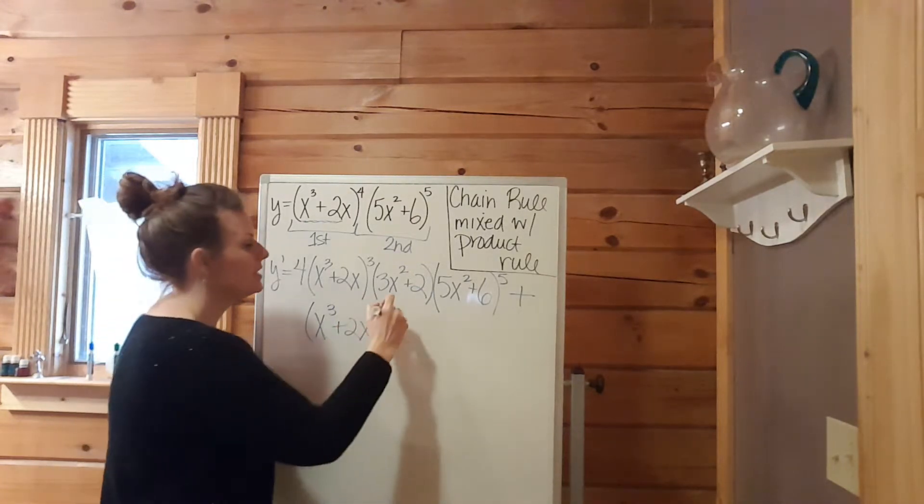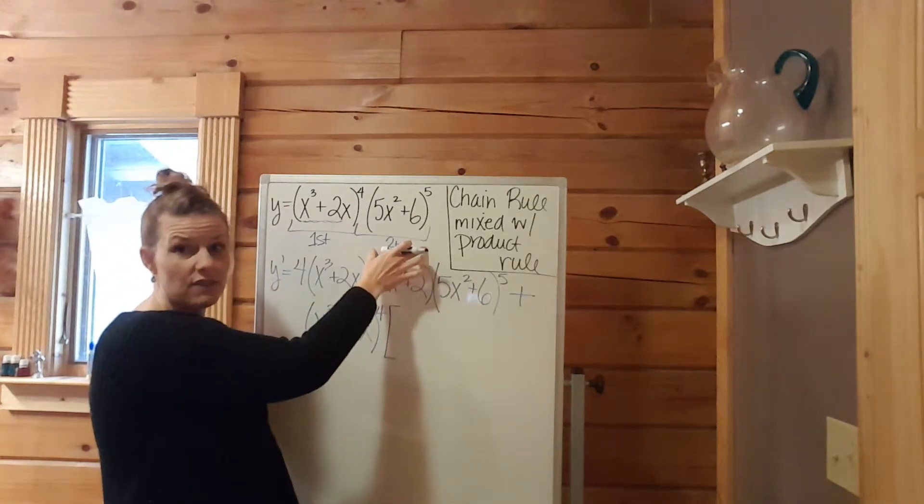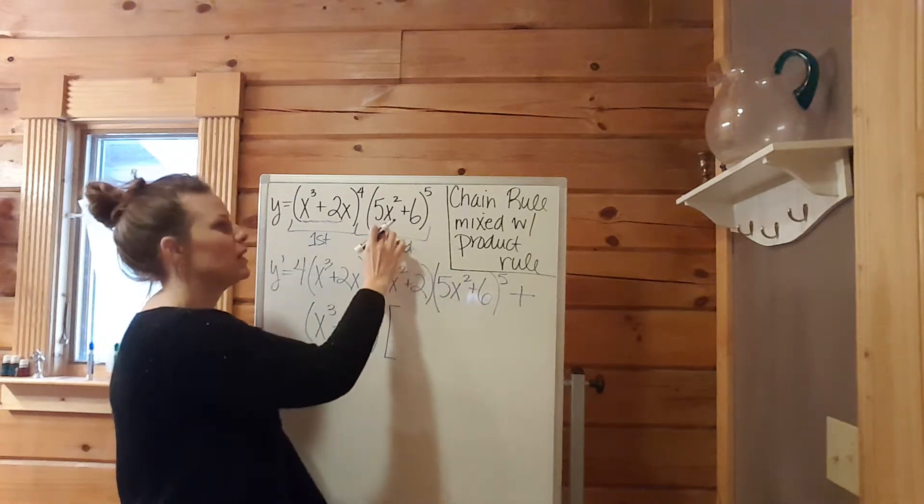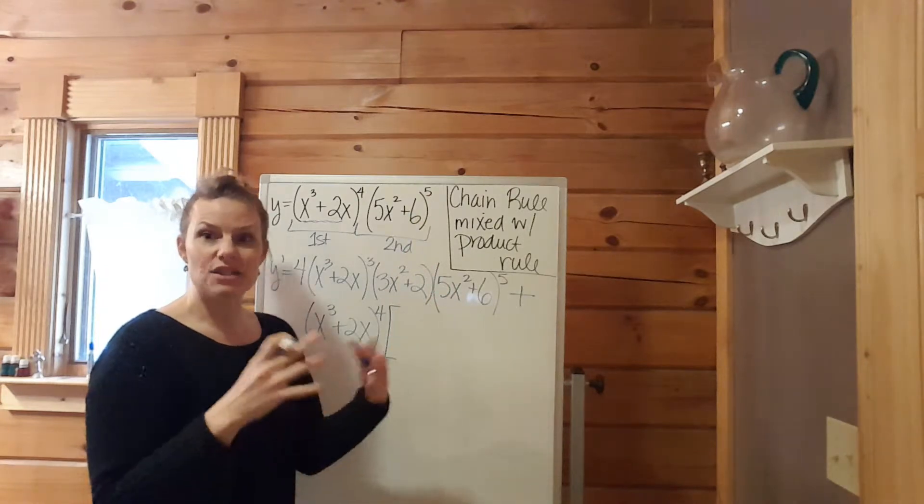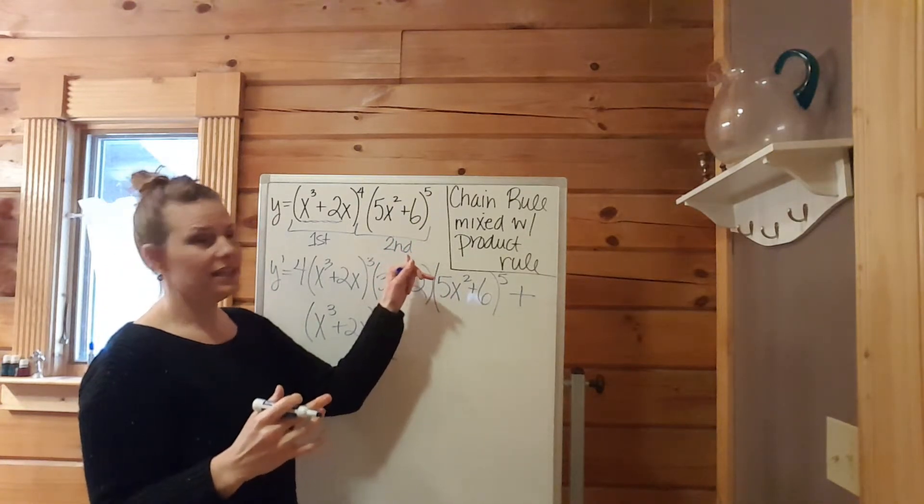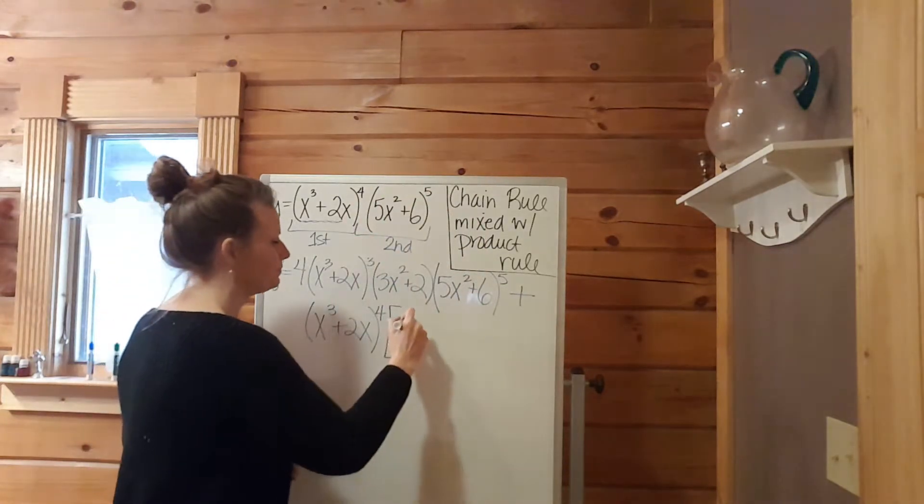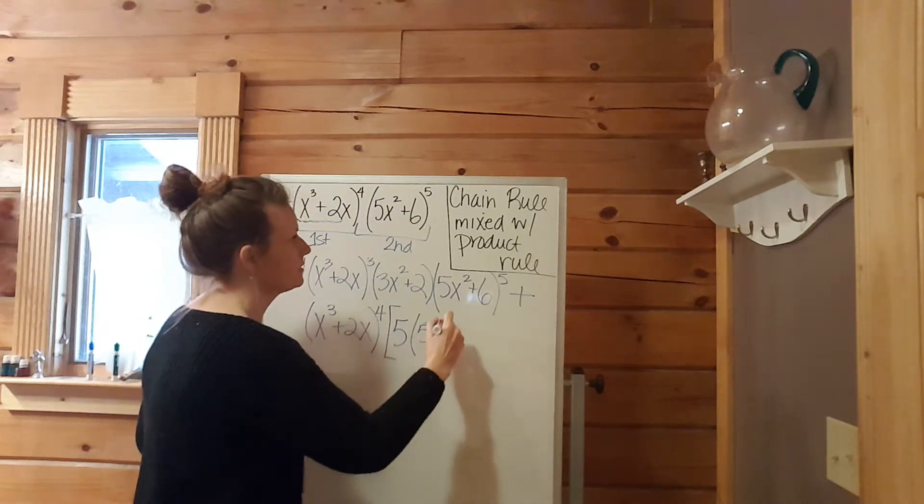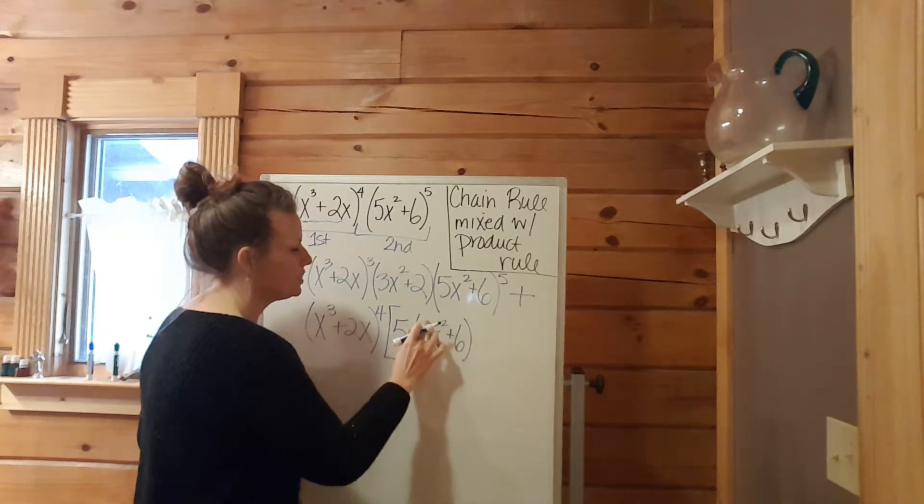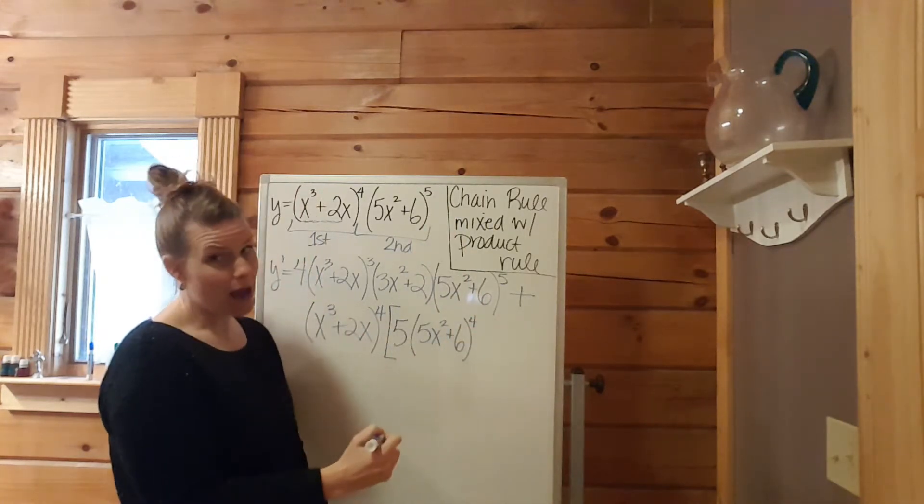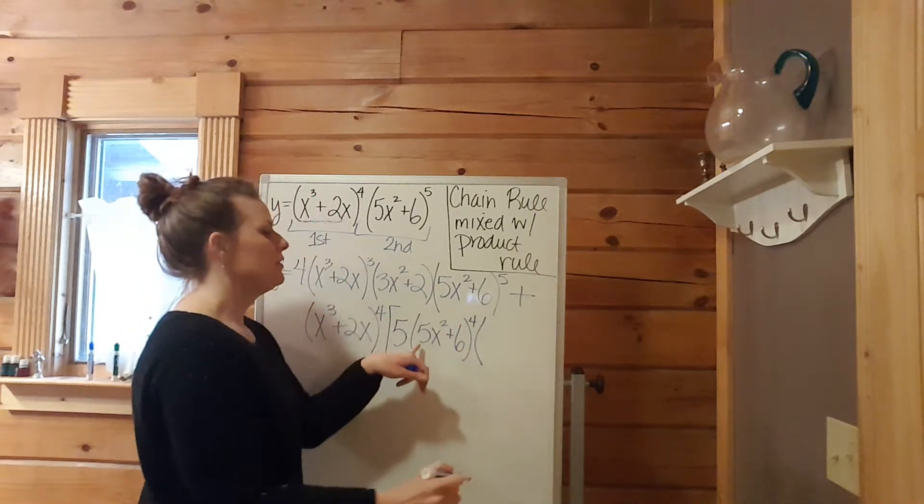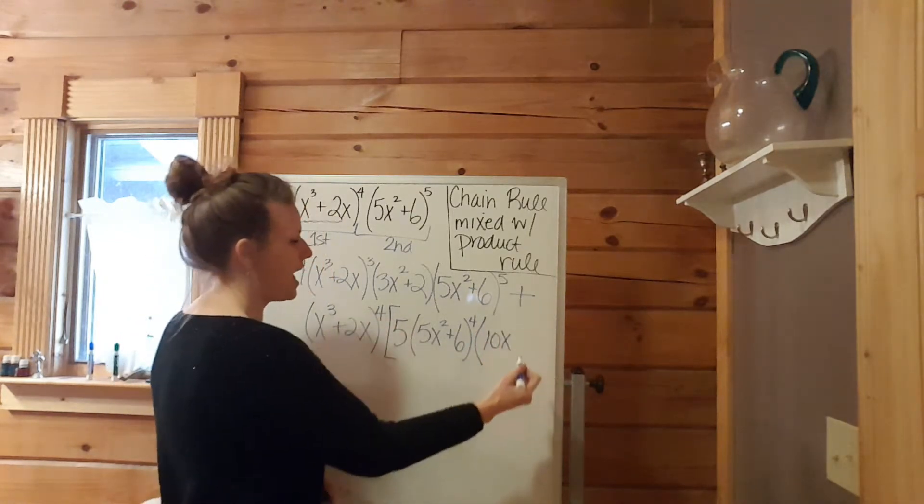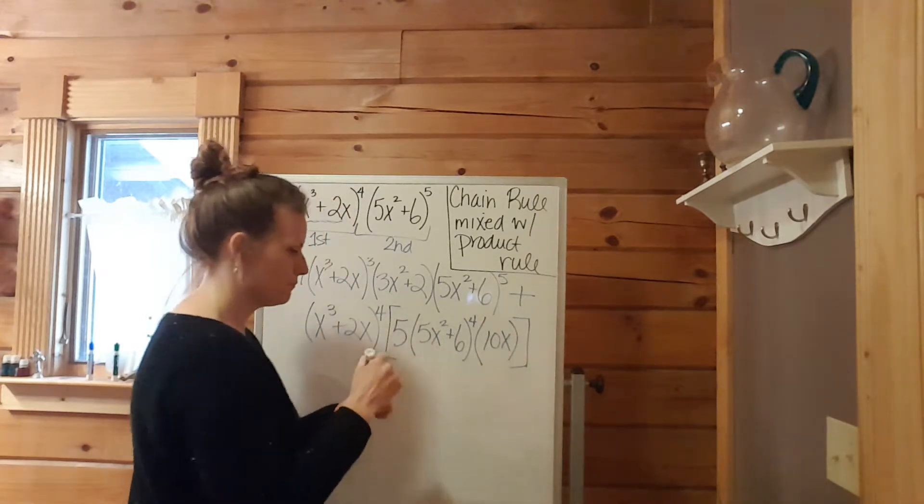First stays exactly the same. That's keep the first times the derivative of the second this time. The derivative of the second thing also requires a chain rule, because we have an inside expression and an outside power. The 5 comes down in front, the inside stays exactly the same, (5x² + 6) raised to, will now be the fourth power. Then we link on the derivative of that inside, which will be 10x.